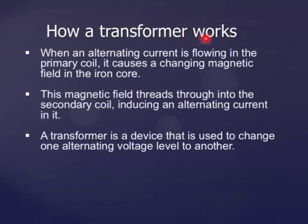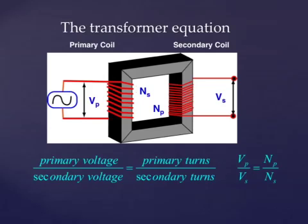How a transformer works: When an alternating current is flowing in the primary coil, it causes a changing magnetic field in the iron core, and this changing magnetic field threads through into the secondary coil, inducing an alternating current in it. A transformer is thus a device that is used to change one alternating voltage level to another.